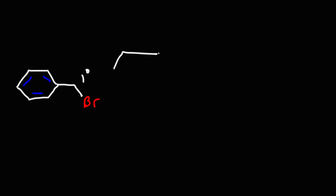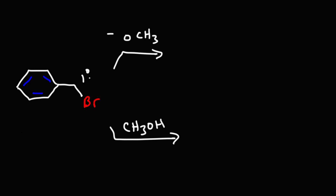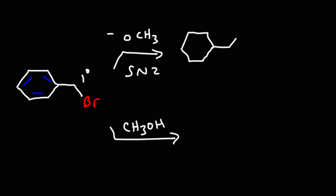We're going to react a primary benzylic halide with methoxide and methanol. In both cases we'll get the same product, but what's the predominant mechanism in each situation? For methoxide: it's a strong nucleophile, and with a primary benzylic halide, we get the SN2 mechanism. It attacks the carbon and kicks out the leaving group, giving us an ether.